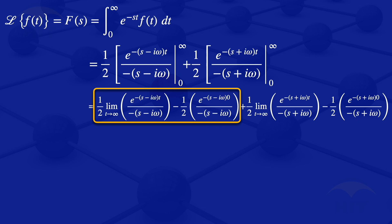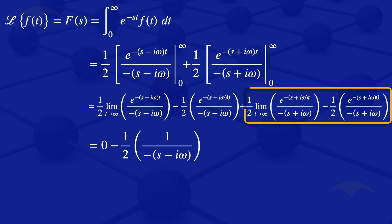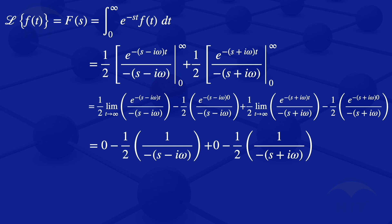As t approaches infinity, the first limit term goes to zero, and where we have the lower limit, e to the 0 equals 1, so the first highlighted part becomes zero minus one half times 1 divided by minus s minus i omega. Similarly, the limit as t approaches infinity in the second part is zero, and e to the 0 gives 1, so that expression becomes zero minus one half times 1 divided by minus s plus i omega. Combining those two under a common denominator, we obtain one half multiplied by 2s divided by s minus i omega times s plus i omega.